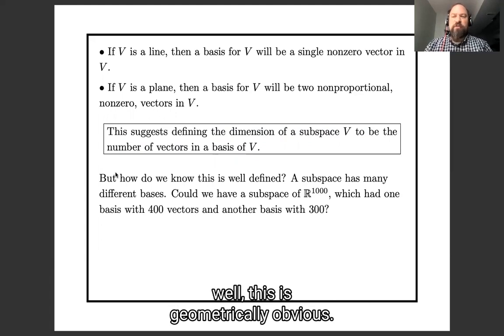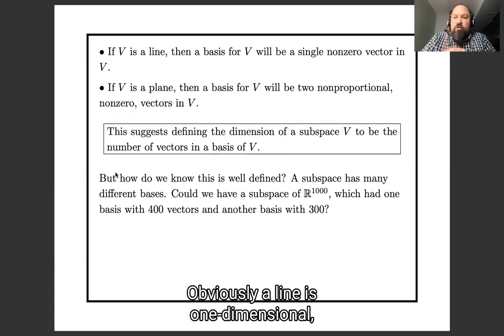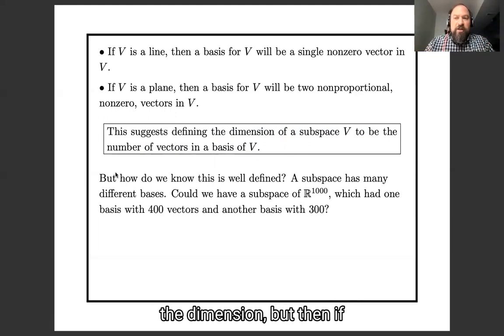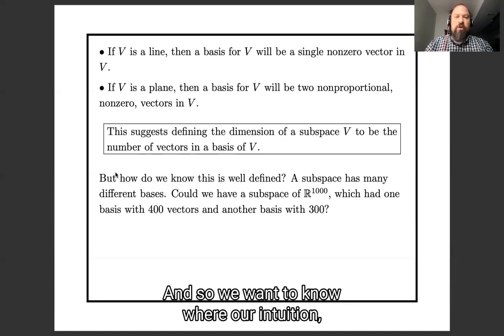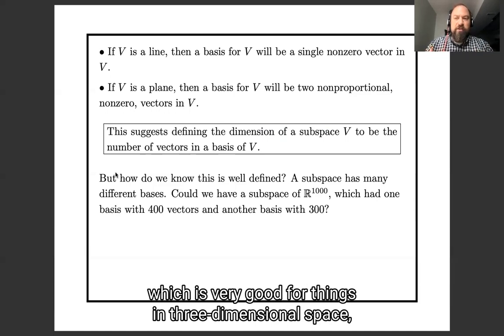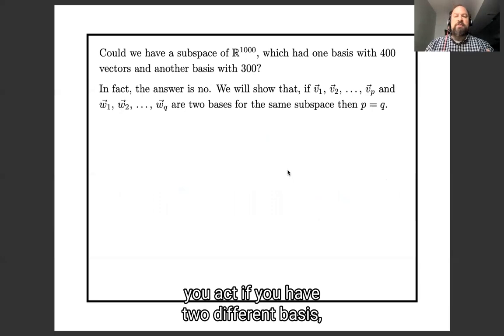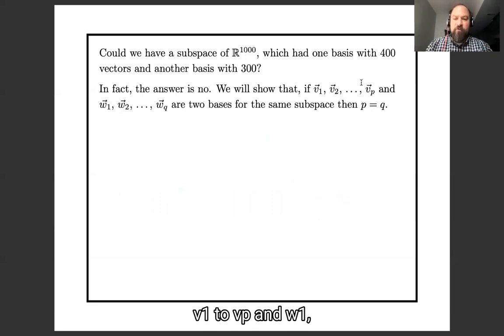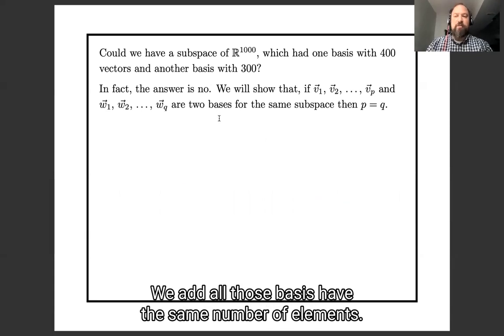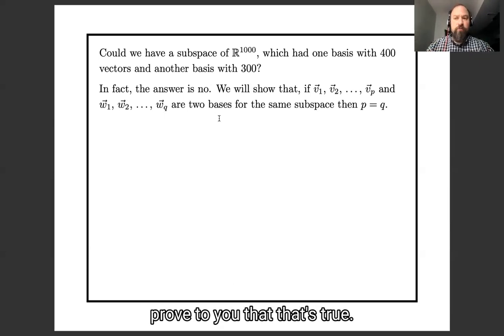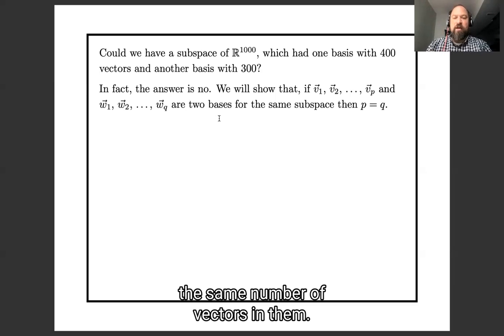You might feel like, well, this is geometrically obvious. Obviously, a line is one-dimensional, a plane is two-dimensional. But remember, we want to be able to use these ideas of linear algebra in thousands and thousands of dimensions. And so we want to know that our intuition, which is very good for things in three-dimensional space, is still correct here. So we want to know that this situation does not occur and that, in fact, if you have two different bases v1 through vp and w1 through wq of the same subspace, we want all those bases to have the same number of elements in them. So the point of today's lecture is to prove to you that's true, that any two bases have the same number of vectors in them.